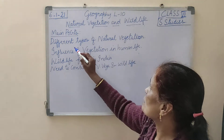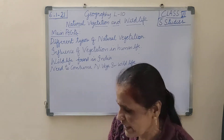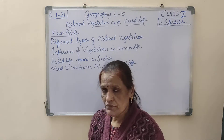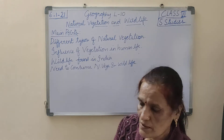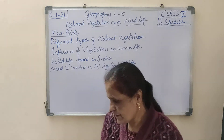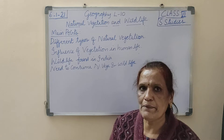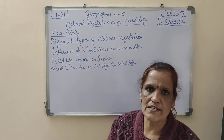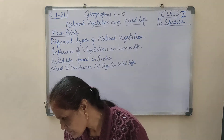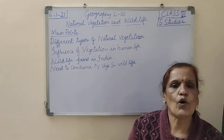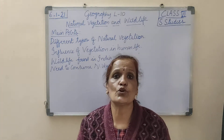First let me tell you about the different types of natural vegetation. There are different types of natural vegetation which we will see in this lesson — that is different types of forest areas. These natural vegetations depend upon the climate, nature of the place, and many other things. According to climate, nature, and rainfall, the growth of natural vegetation is dependent.